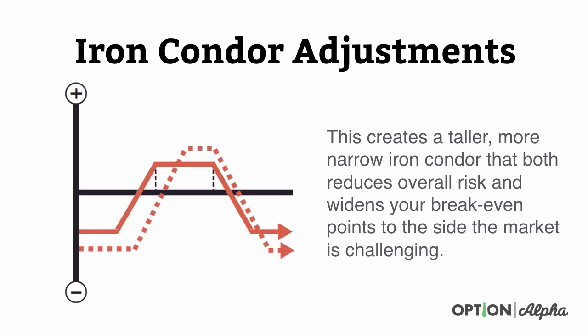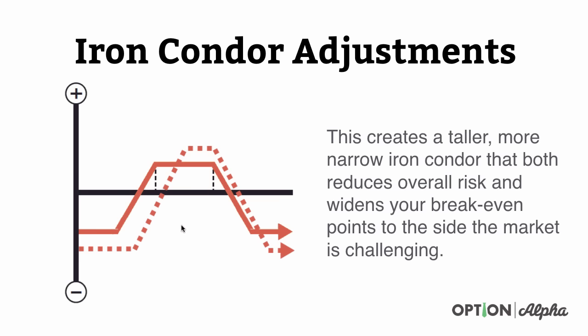Once you roll one of the sides closer to where the stock is — in this example the stock moved higher towards our call spread strike, up to around $55 — what you're going to do is close out of your current put spread and re-enter a new put spread closer. It's the same technique we used with short straddles and short strangles: close out of the profitable one and re-establish a new position a little bit closer to where the market's trading. Notice how it gives us a bit more balance over this new iron condor, creating a taller, more narrow iron condor that both reduces risk and widens our breakeven points to the side that the market is challenging. Most importantly, it reduces risk first.